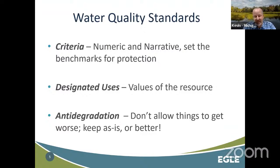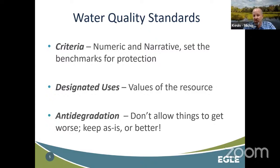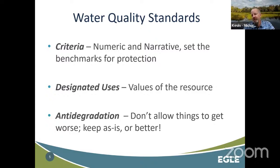Water quality standards come in three parts. They include criteria — the numbers, sometimes conditions or narratives, that you don't want to go above — to protect designated uses of your waters. Designated uses are the values and function of our waters that standards must include. And there always has to be an anti-degradation component, which means we don't want to take steps backward in water quality. We're always trying to maintain or increase water quality to protect for different things.